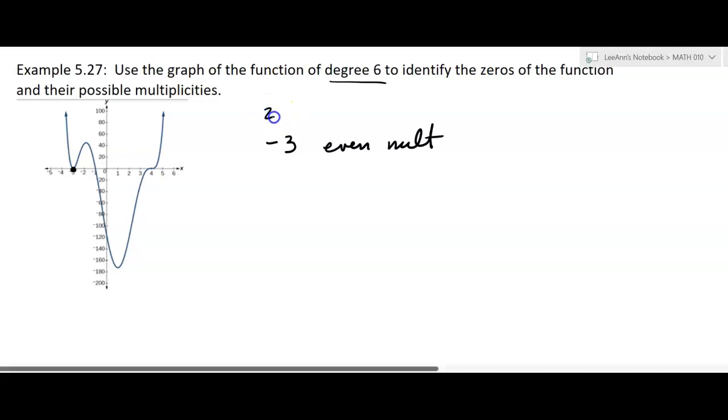So it could be 2 or more. And then negative 1, that's a zero. And that's going to have a multiplicity of 1, because it's just crossing straight through. It's not flattening.